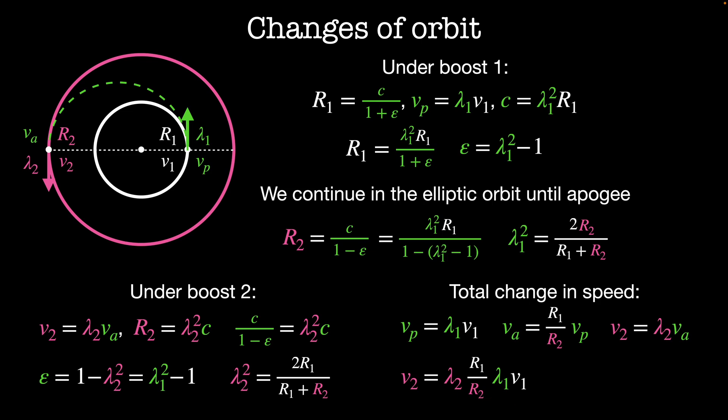Combining everything, V2 equals lambda2 times the velocity at apogee, which is R1 divided by R2 times the velocity at perigee, which is lambda1 times V1. Plugging in the definitions for lambda1 and lambda2, we find that V2 equals the square root of R1 over R2 times V1. I'll leave it as an exercise to verify this agrees with the Newtonian definition of circular orbit velocity.